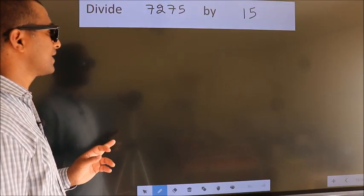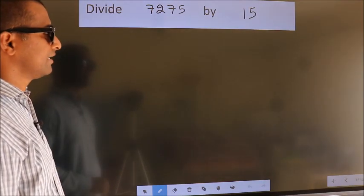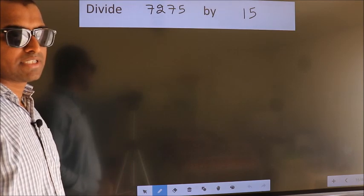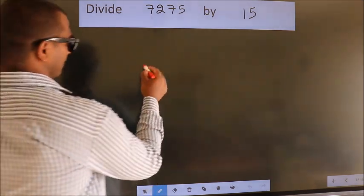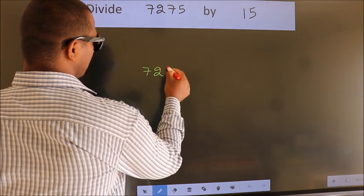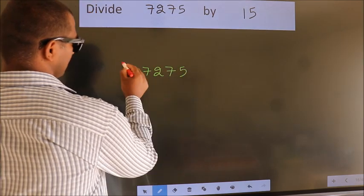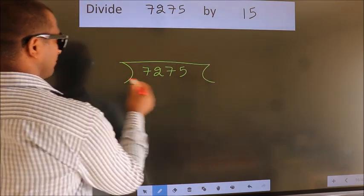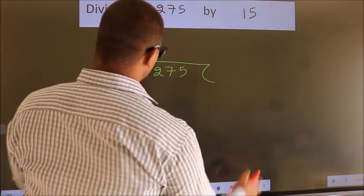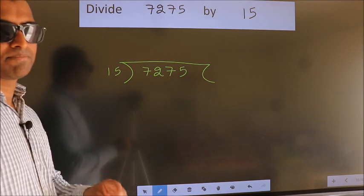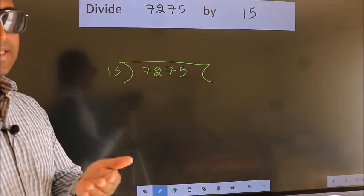Divide 7275 by 15. To do this division, we should frame it in this way. 7275 here, 15 here. This is your step 1. Next.